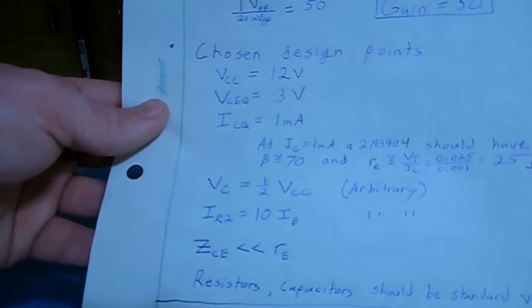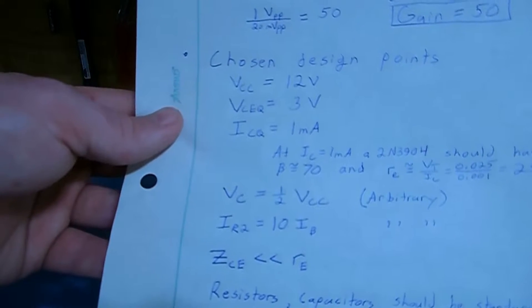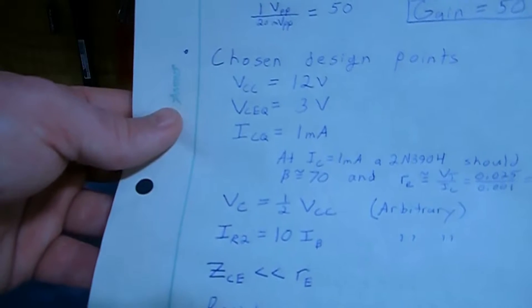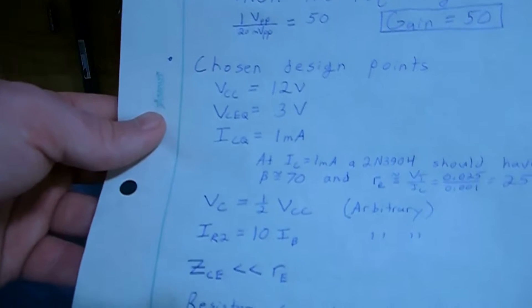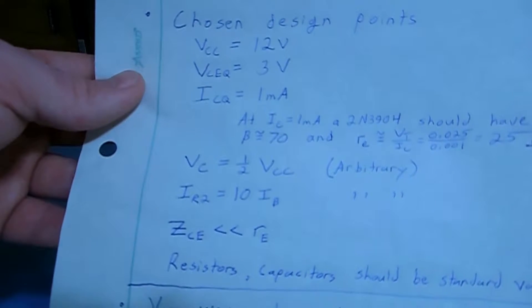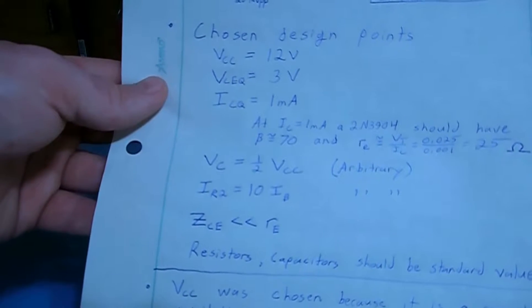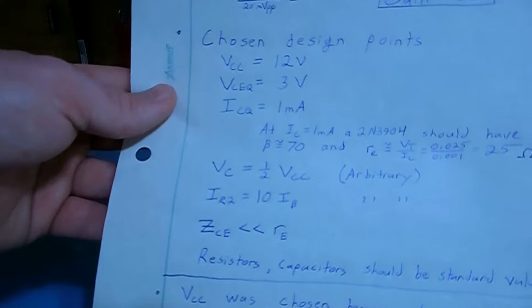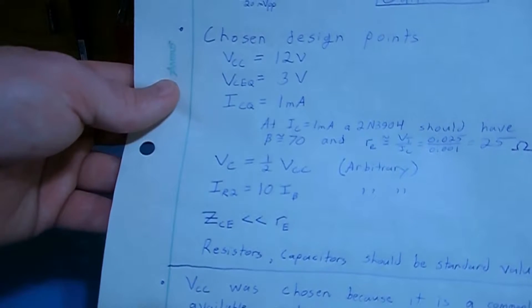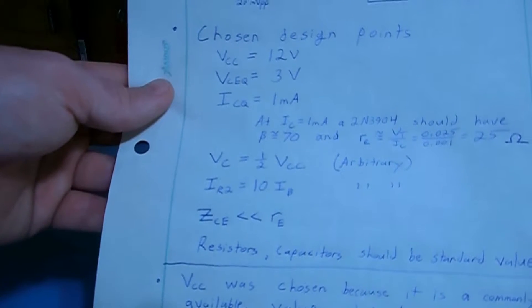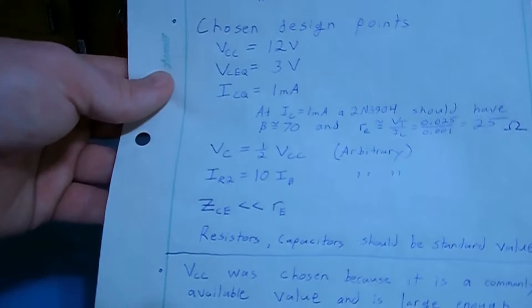Next we're going to choose our collector terminal voltage to be halfway between our power rails, so 6 volts in this case, and that's completely arbitrary. It could be any number of different values. And we're also just going to arbitrarily choose our current through the voltage divider on the base terminal to be 10 times the base current.